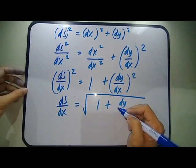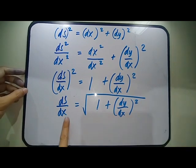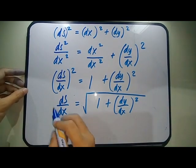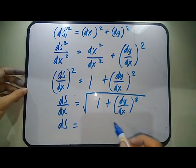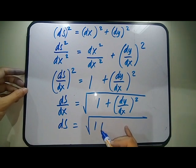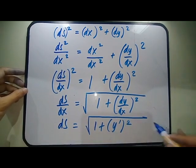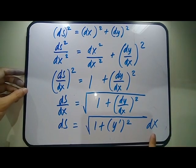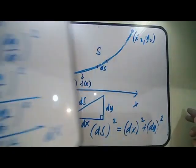Then we raise both sides by 1/2, giving us the square root. So dS/dX = √(1 + (dY/dX)²). Multiplying both sides by dX, we get dS = √(1 + Y′²) dX.